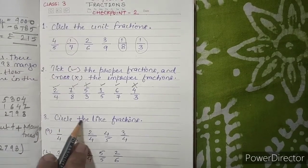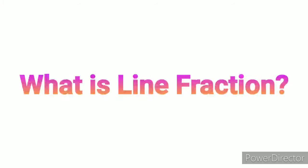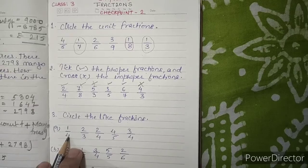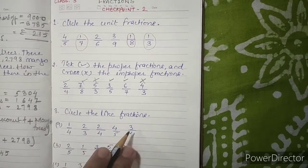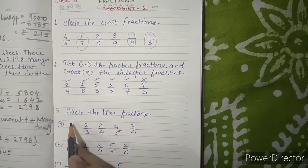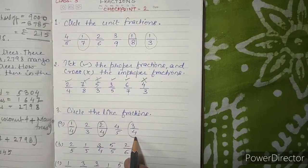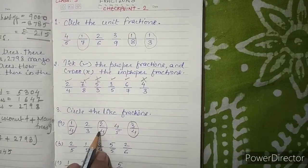Question number 3: Circle the like fractions. Like fractions are fractions which have the same denominator. In Part A, the fractions given are 1 by 4, 2 by 3, 2 by 4, 4 by 5, and 3 by 4. Among these, 1 by 4, 2 by 4, and 3 by 4 all have the same denominator of 4, so these three are like fractions.